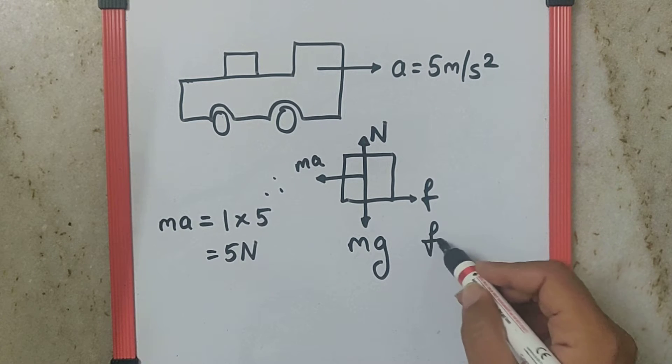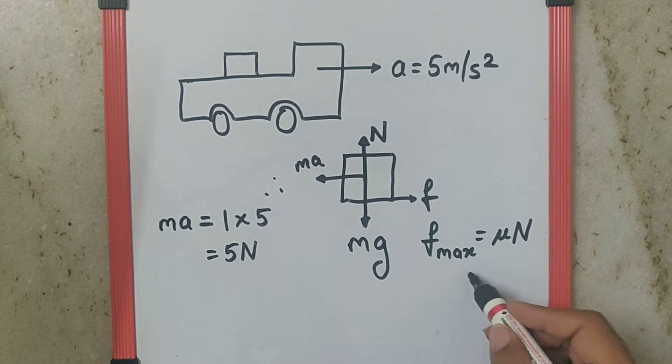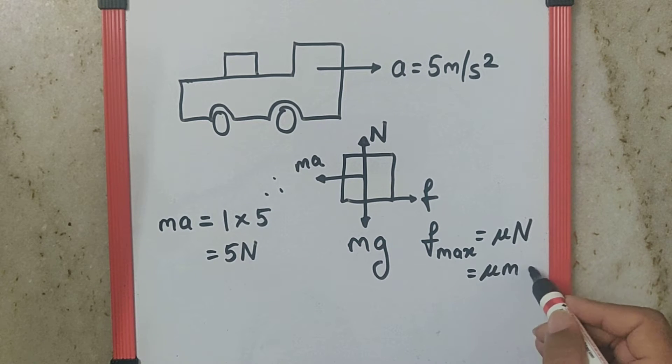To calculate the maximum value of friction, the formula is μN, where N is mg, so it becomes μmg.